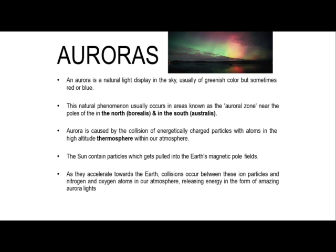What about auroras? We have two forms of auroras — aurora borealis and aurora australis. An aurora is a natural light display in the sky, usually of greenish color, but sometimes red or blue. This phenomenon usually occurs in areas known as the auroral zone near the North Pole and the South Pole. Aurora is caused by the collision of energetically charged particles with atoms in the high-altitude thermosphere. The Sun contains particles which get pulled into the Earth's magnetic pole fields. As they accelerate towards the Earth, collisions occur between these ion particles and nitrogen and oxygen atoms in our atmosphere, releasing energy in the form of amazing aurora lights.